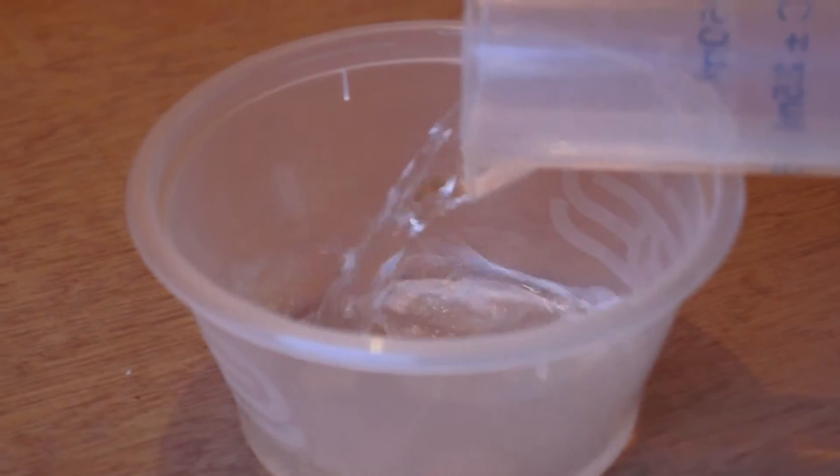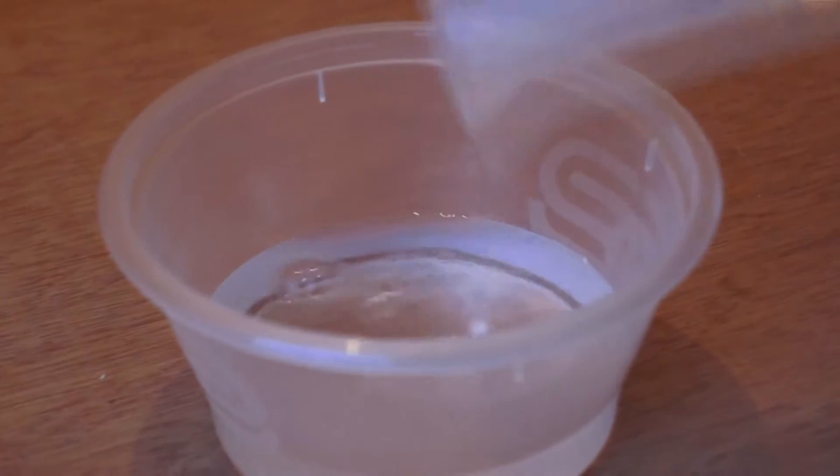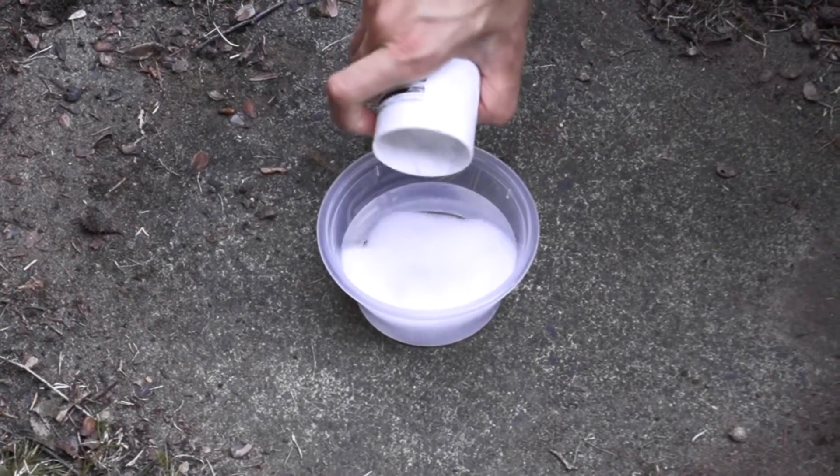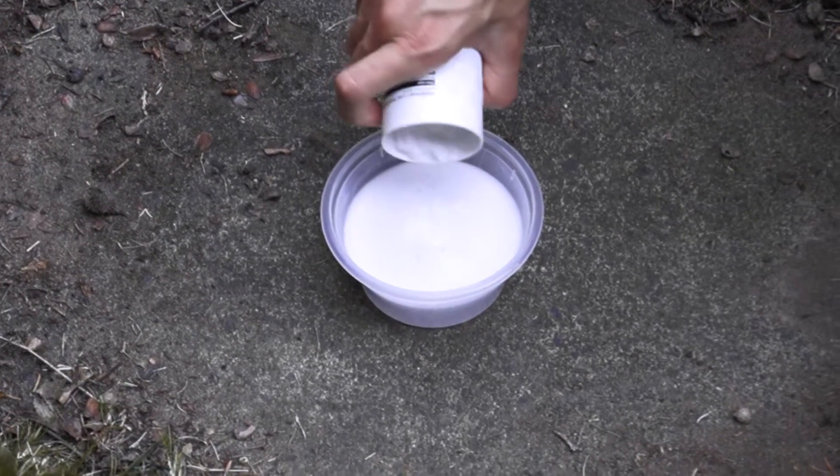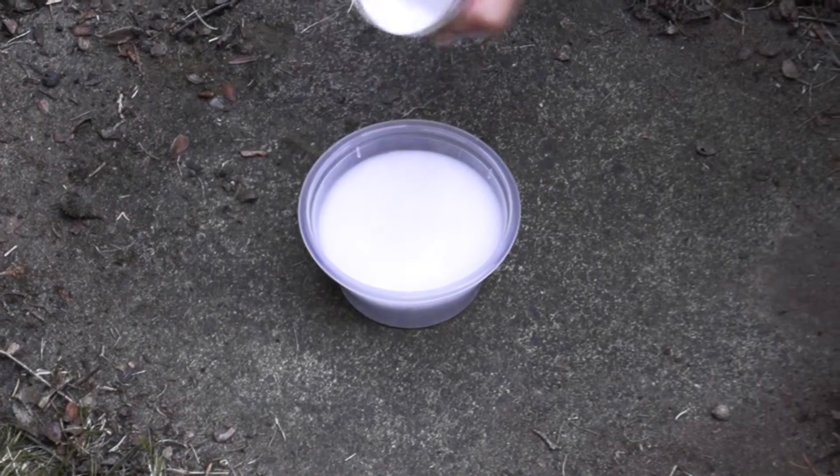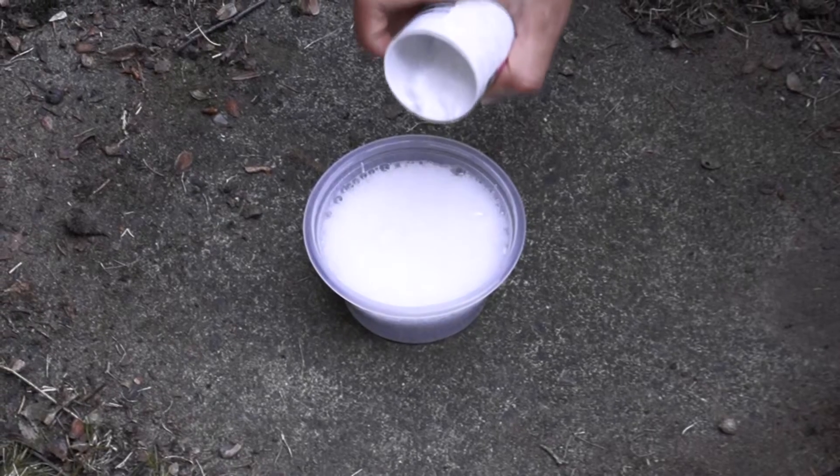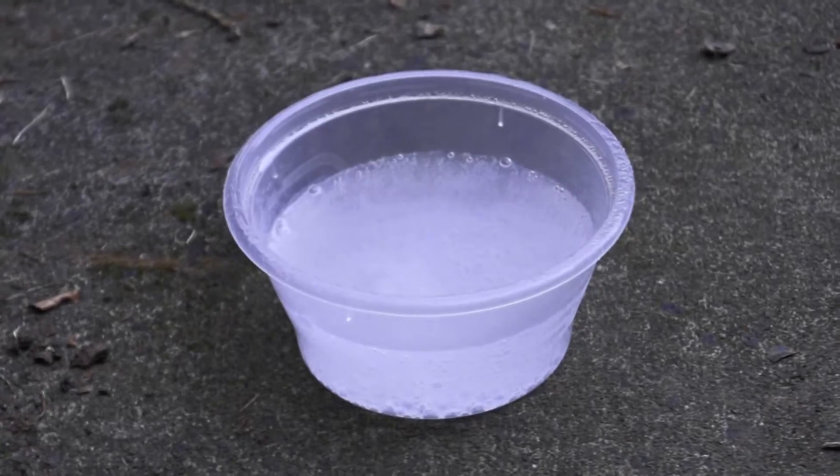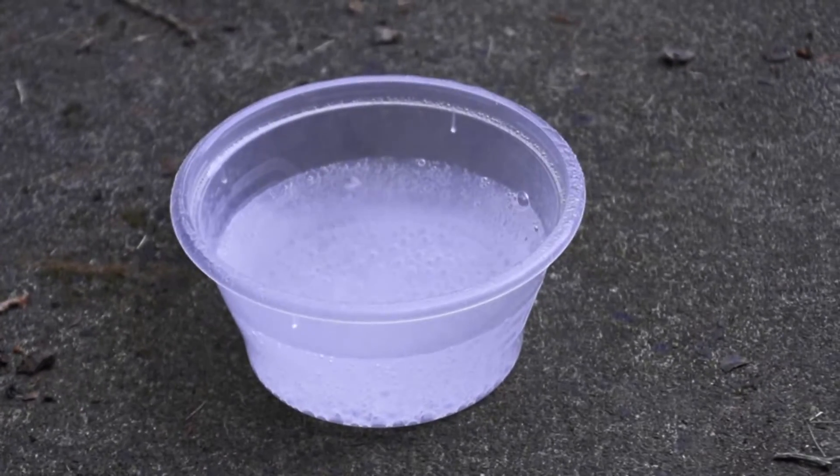Firstly you will need to measure out 200ml of vinegar. Pour this vinegar into your plastic bowl and take this bowl to a place where you don't mind a mess being made, I did mine outside. React the acetic acid in the vinegar with the sodium bicarbonate. You should keep pouring in the sodium bicarbonate until all of the acetic acid has reacted. This could take a while.